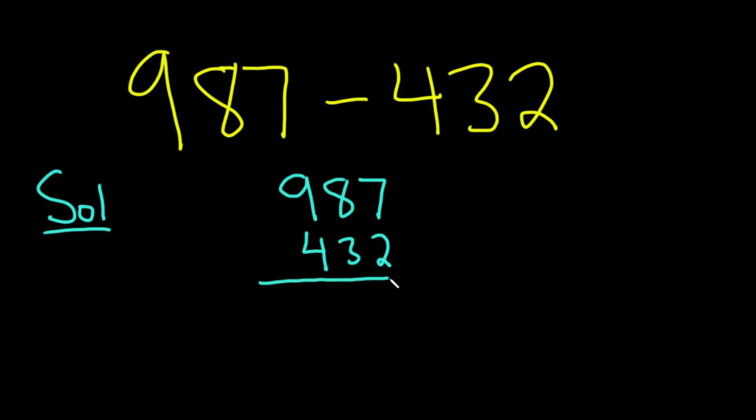And then you draw a line and then you put a minus sign and then you just start subtracting. So 7 minus 2 is 5. So we put the 5 right there underneath to indicate that that's the result.